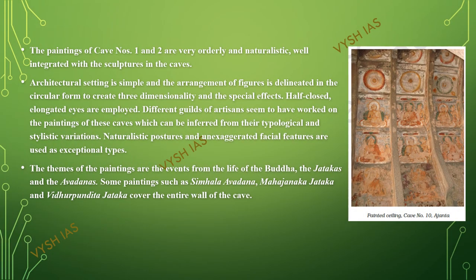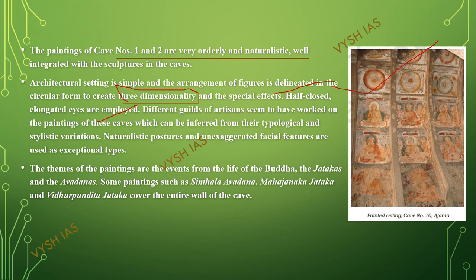The paintings in Cave numbers 1 and 2 are very orderly, naturalistic, and integrated with the sculpture of the caves. This is a painted ceiling from Cave number 10 of Ajanta. The architectural setting is simple and the arrangement of the figures is delineated in a circular form to create three-dimensionality. Half-closed and elongated eyes are also employed for the images. Different guilds of artisans seem to have worked on the paintings, which can be inferred from their typological and stylistic variation. Naturalistic proportions and less exaggerated facial features are used as expressive types.